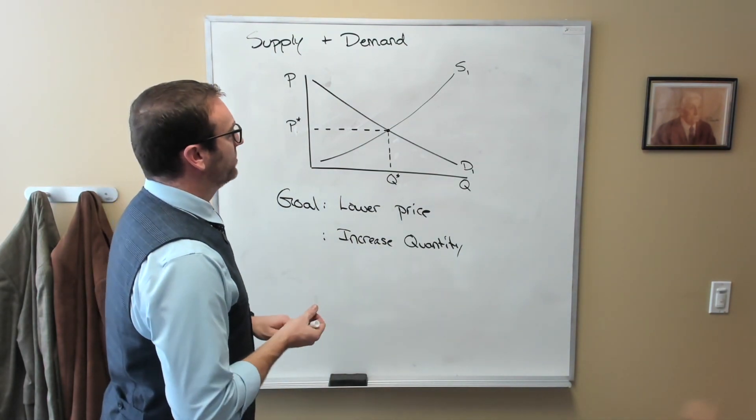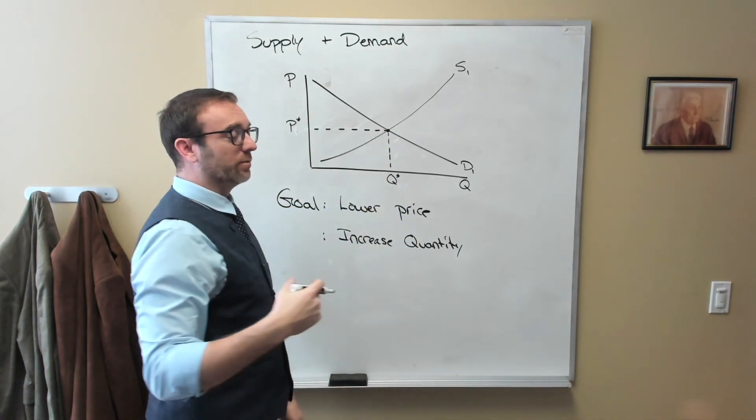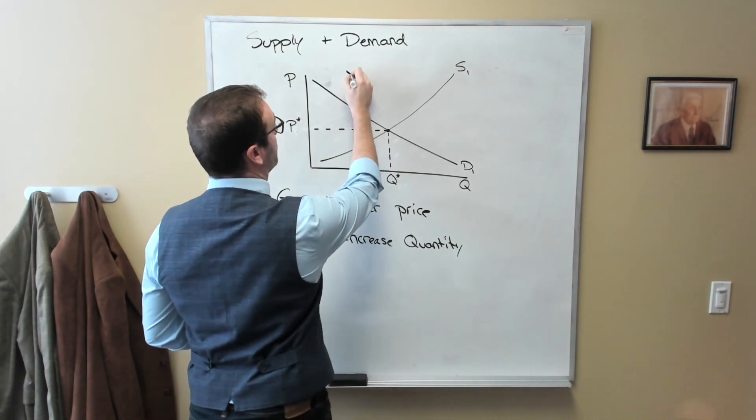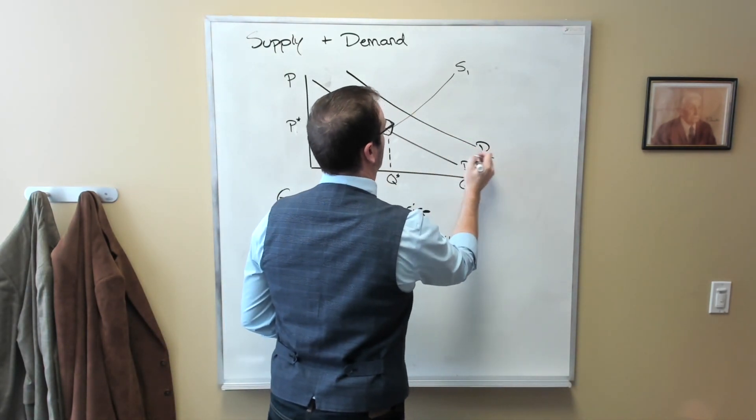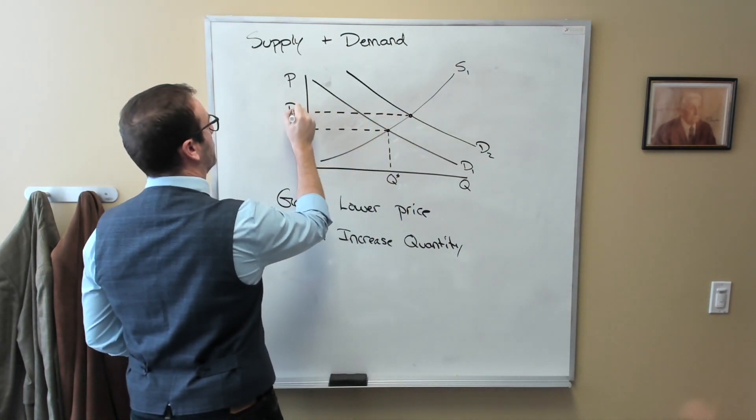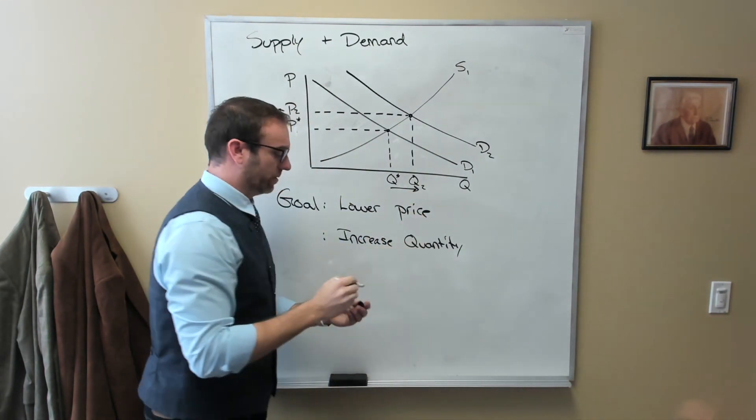Okay, if we do that, well, that would be a shift in the demand curve because we are changing the consumptive habits of people. And it would be an increase. And so what would happen as a result of this? Well, the price would go up and the quantity would increase.